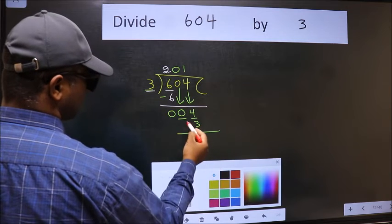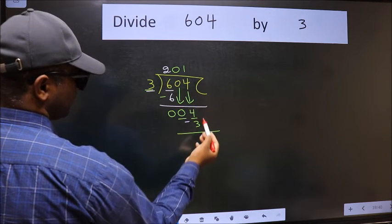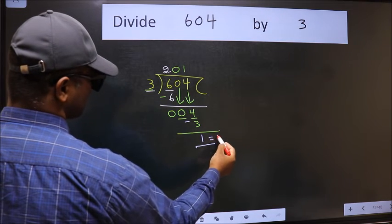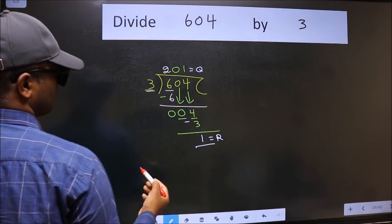Now we should subtract. We get 1. No more numbers to bring down. So we stop here. This is our remainder and this is our quotient.